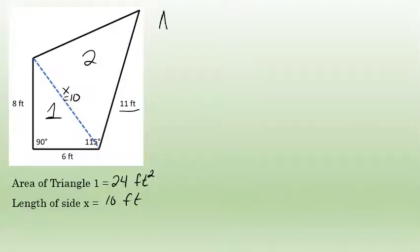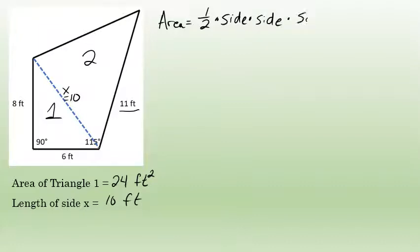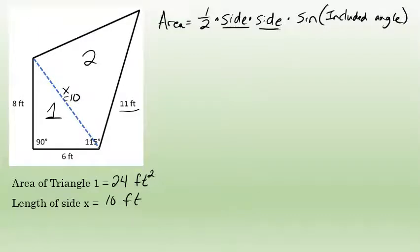There's a formula that can be used to find the area of any triangle. It states that if you take one-half of one side of the triangle, times another side of the triangle, times the sine of the included angle — the angle in between those two sides — that will give you the area of the entire triangle. In triangle 2, I'm going to call that included angle z.